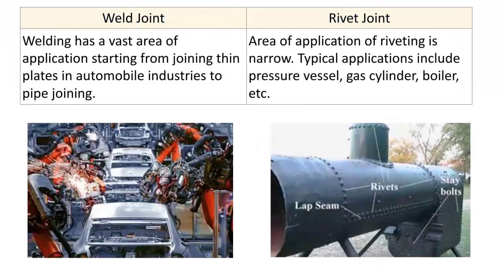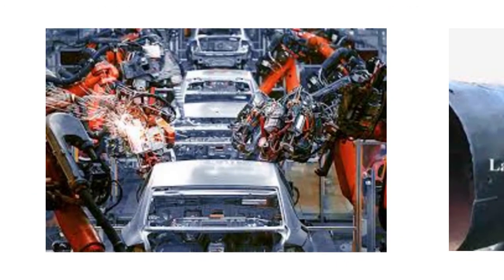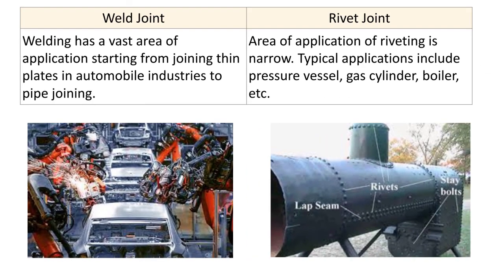Welding has a vast area of applications, from joining thin sheet metals in automobile industries to pipe joining in refineries and other plants. The area of application of riveting is narrow; typical applications include pressure vessels, gas cylinders, and boilers.